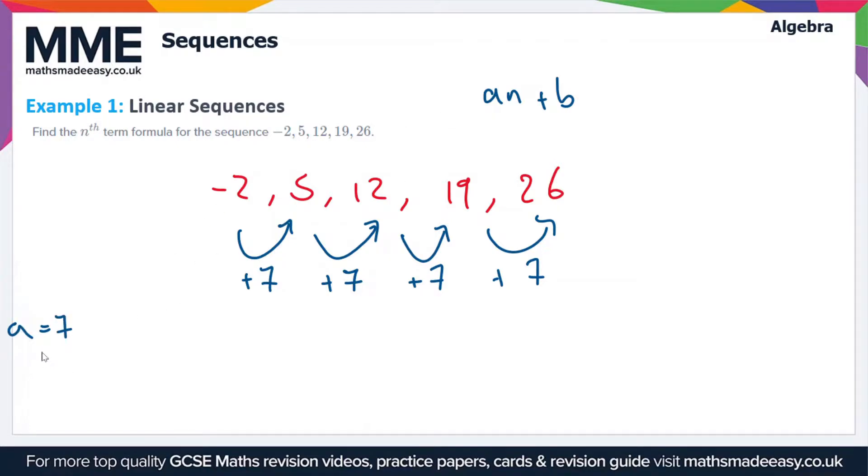If we have the sequence 7n and substitute in values of n equals 1, 2, 3, 4, 5 and so on, then we'll get the sequence 7, 14, 21, 28, 35. So this is just the 7 times table.